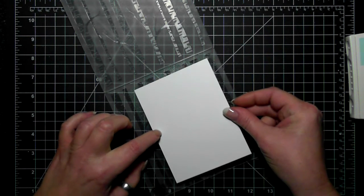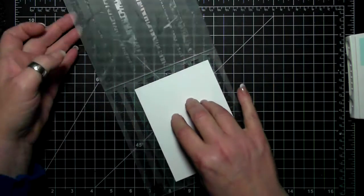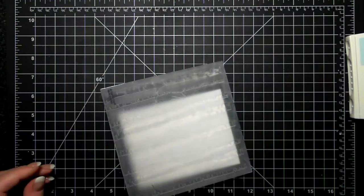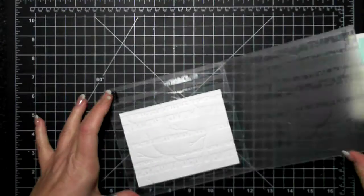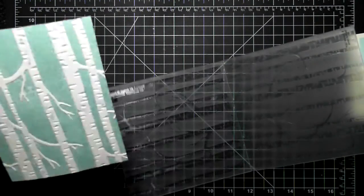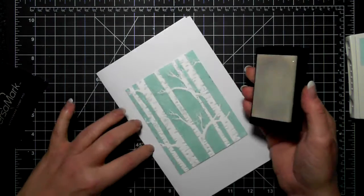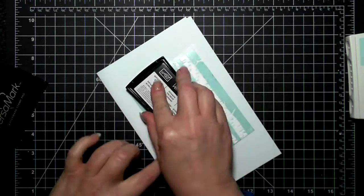I just inked the embossing folder up and I'm placing a little piece of whisper white thin cardstock. I'll be putting that through the big shot, and then out comes an inked background plus an embossed background. Cool, hey?